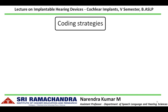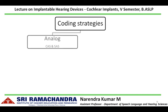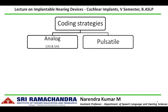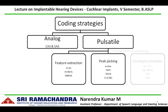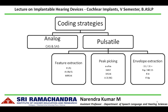Speech coding strategies can be classified depending on the type of stimulation used — analog or pulsatile. Examples of analog stimulation strategies are compressed analog strategy and simultaneous analog strategy. Pulsatile stimulation strategies can be further divided into feature extraction strategies, peak picking strategies, and envelope extraction strategies.